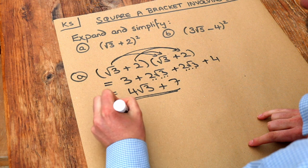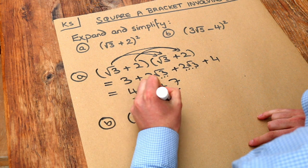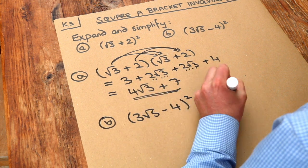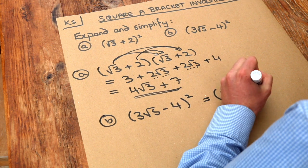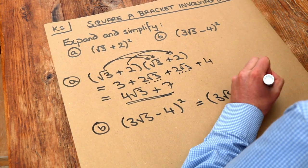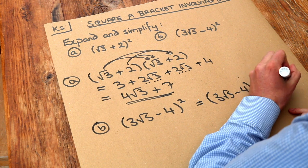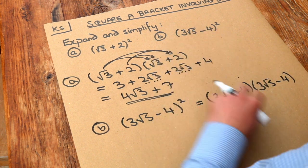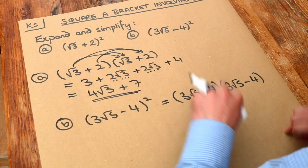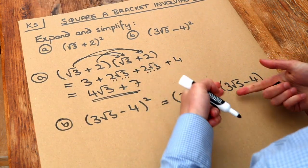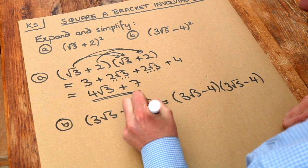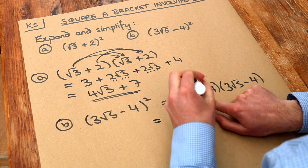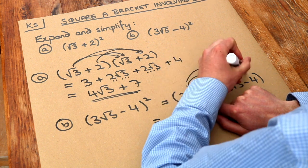Now for part B: when we square this it means we multiply it by itself, so 3 root 5 minus 4, multiplied by itself. Do not use a times symbol — just write the two brackets next to each other. In algebra we generally want to avoid the times symbol as much as possible and use brackets instead. We then do the first thing in the first bracket multiplied by each of the things in the second.